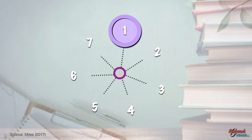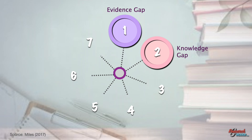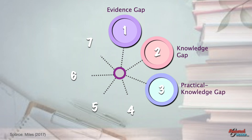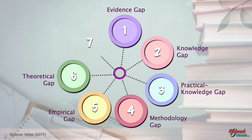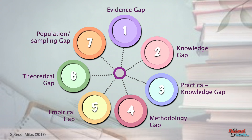The first type of gap is the evidence gap, followed by knowledge gap or knowledge void. The third gap is the practical knowledge gap. Methodology gap comes fourth. The fifth is empirical gap. Next is the theoretical gap. And finally, the population or sampling gap.